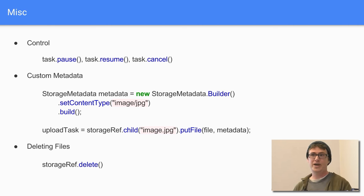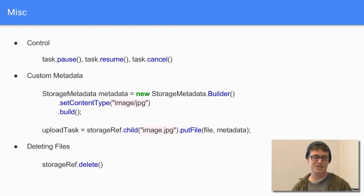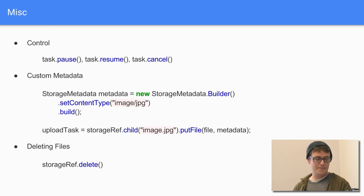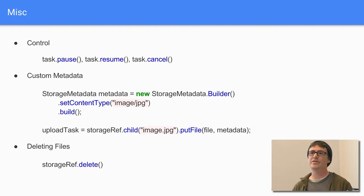With your upload and download tasks, you can pause, resume, and cancel — so you're not stuck waiting after firing off a request. You can also give files custom metadata. And you can delete files from storage: once you have the reference, just call reference.delete() to remove it and free up space.